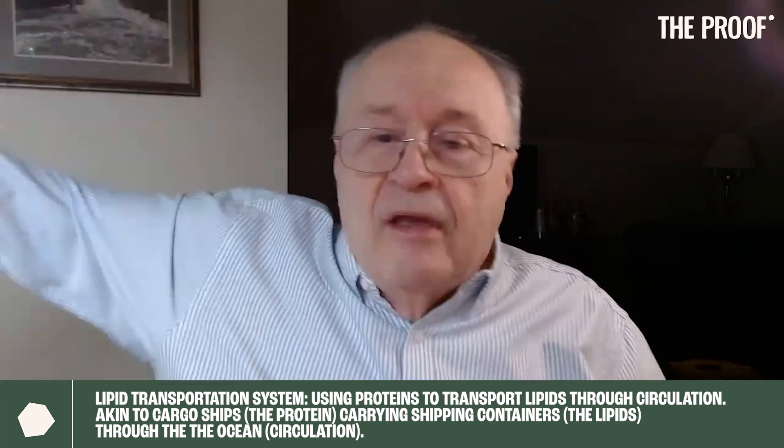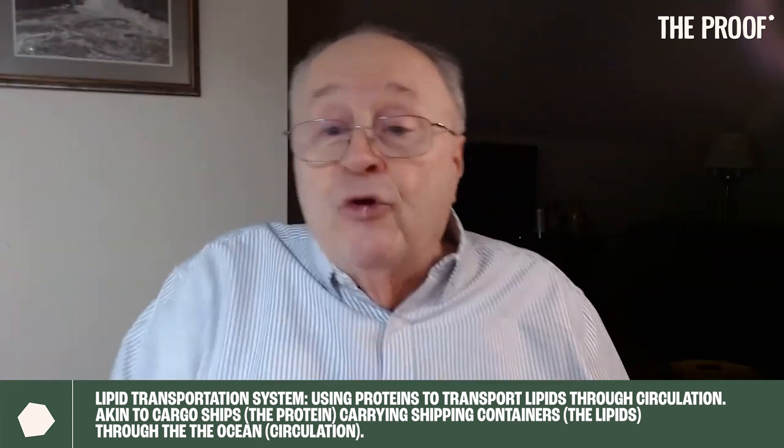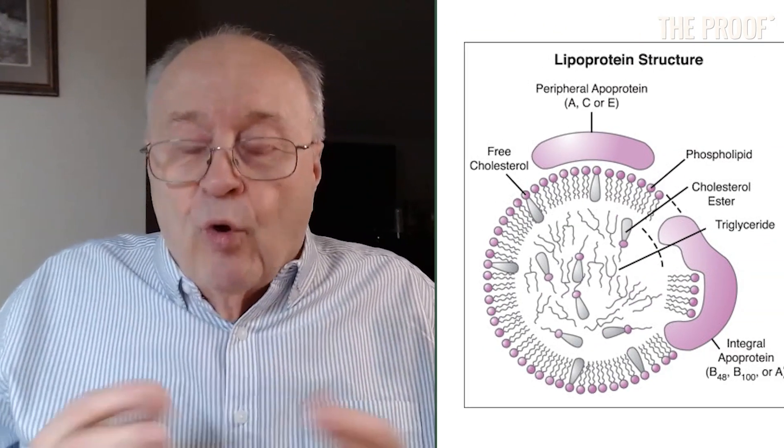Evolution solved this early on: we needed to develop a lipid transportation system so lipids can go here, there, and everywhere, or be brought back to an organ that can eliminate excess lipids. The chemical realization was that if you stick lipids onto a protein — and proteins are for the most part water soluble — then a collection of lipids bound to a protein becomes a lipid transportation vehicle. You would naturally call that a lipoprotein, because it consists of lipids and one or more proteins. So our body was given the ability to produce lipid-carrying molecules called lipoproteins.